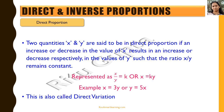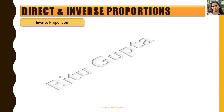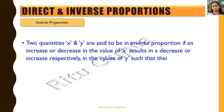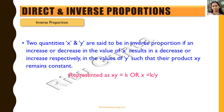This is also called direct variation. Now let's understand what we mean by inverse proportion. Two quantities x and y are said to be in inverse proportion if an increase or decrease in the value of x results in a decrease or increase respectively in the values of y, such that their product remains constant. Their product x into y should remain constant, and then we say x and y are inversely proportional. We represent that by saying xy equals k, or x equals k by y.